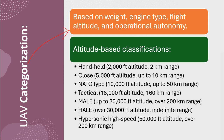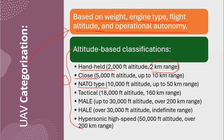UAVs can be categorized based on weight, engine type, flight altitude, and operational autonomy. Based on altitude, types include: handheld UAV (up to 2,000 feet, 2 km range), close UAV, NATO type, tactical type, MALE type, HALE type, and hypersonic high-speed UAV — the most advanced, capable of reaching 50,000 feet altitude and covering over 200 kilometers.